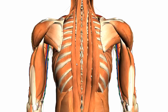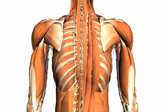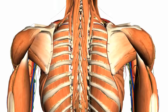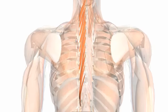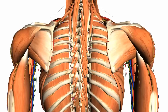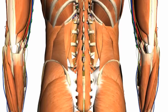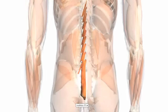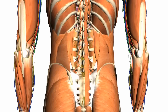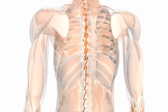Deep to the erector spinae muscles, you've got the transversospinalis muscles. There are three: the semispinalis, which is the most superficial; the multifidus; and then, most deep, you've got the rotatores muscles.